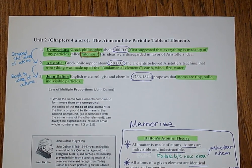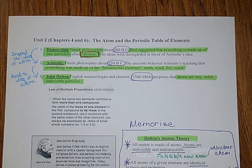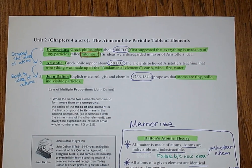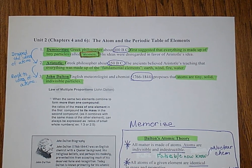Aristotle was also a Greek philosopher who came around 350 BC, but he took a different approach from Democritus and said that everything is made up of fundamental elements: earth, wind, fire, and water. Then we have John Dalton, from 1766 to 1788. Dalton was an English chemist who said that atoms are tiny, solid, individual, indivisible particles.